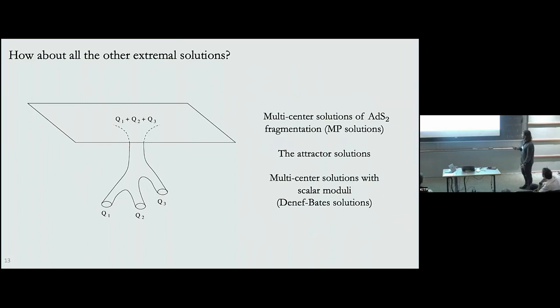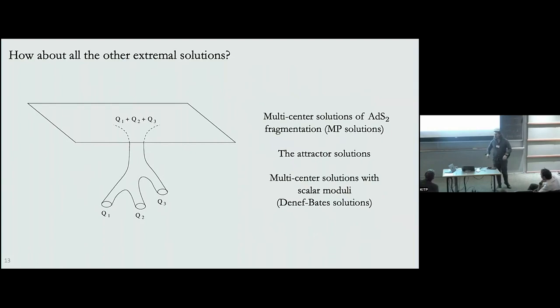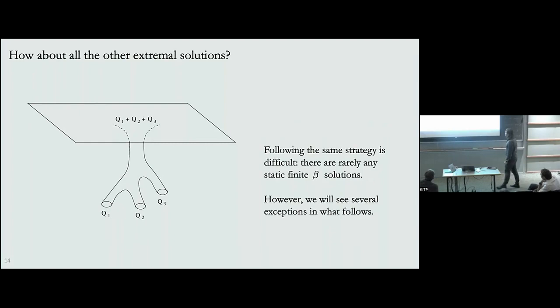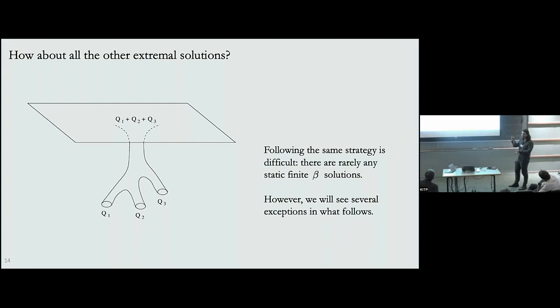The point is that you take a spacetime with exactly the same asymptotics but split the charges amongst different black holes. Because these black holes are extremal, they usually have mass equal to charge, and the gravitational and electric forces cancel, meaning they're in perfect equilibrium. However, following the same strategy as before is difficult for multi-center solutions because there are very rarely any static solutions at nonzero temperature — once you turn on a temperature the black holes attract and the situation becomes very complicated.